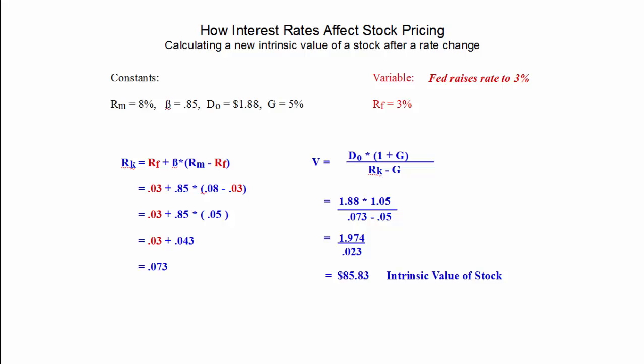Let's say the Fed raised the rate to 3%, and we are going to change the risk-free rate just to 3%. That is the only change we are going to make in this calculation. You will see that the required rate of return on the left is now 0.073 or 7.3%. When we plug that into the calculation on the right, you see that now the intrinsic value of the stock has dropped down to $85.83.